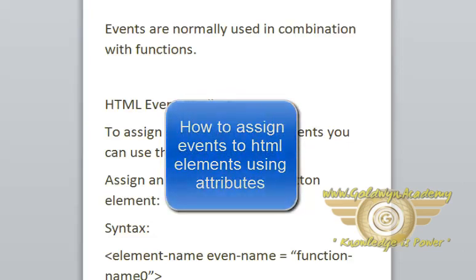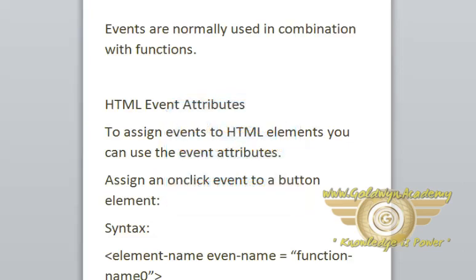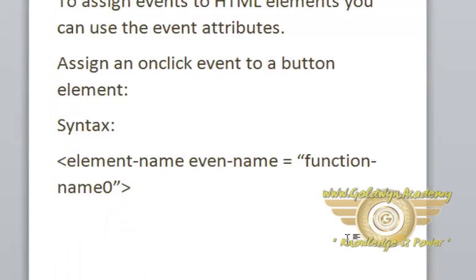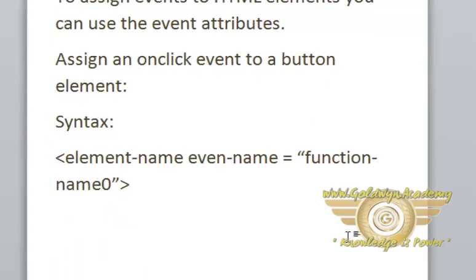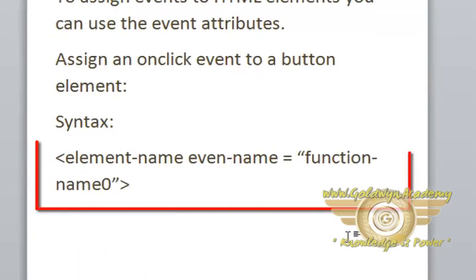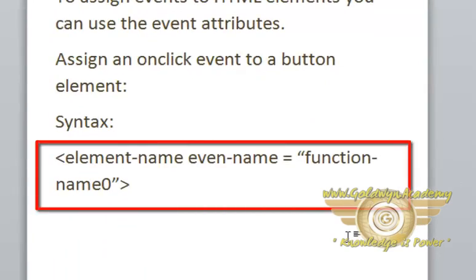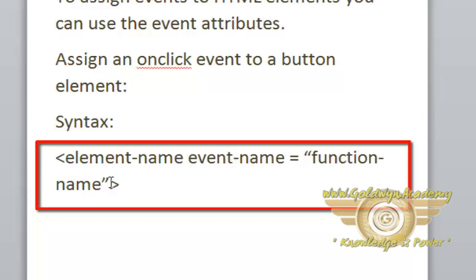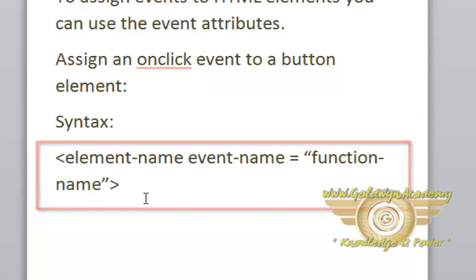HTML event attributes. To assign events to HTML elements, you can use the event attributes. For assigning an onClick event to a button element, here is the simple syntax: element name, then event name, then name of function.